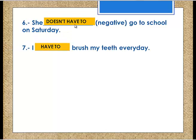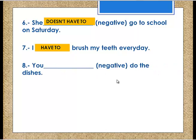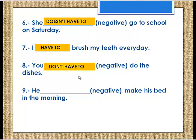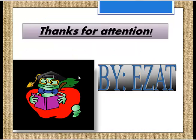Number seven: 'I have to brush my teeth every day.' Number eight: 'You ___ do the dishes' — 'don't have to.' Number nine: 'He ___ ...' — 'doesn't have to.' This is all for today. I hope you enjoy the video. If you like it, don't forget to subscribe and press like. See you next time!